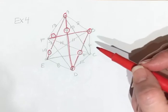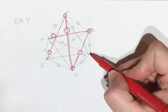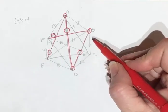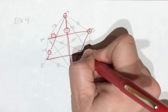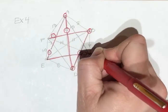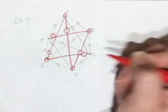My next shortest is 6. I can't use this 6 because this one's already used. I can use this 6. Now this one is done.